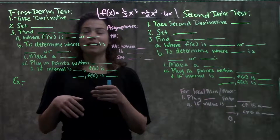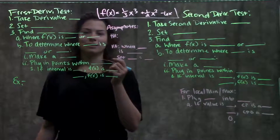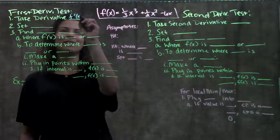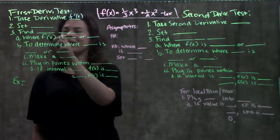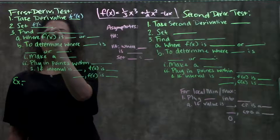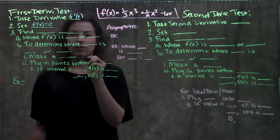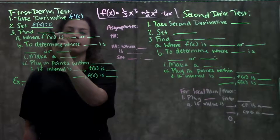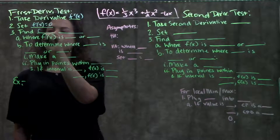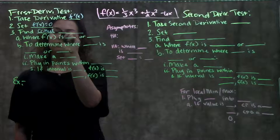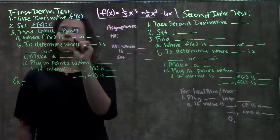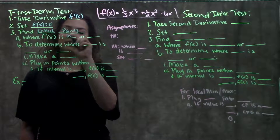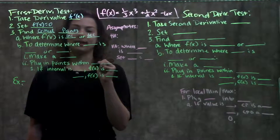Starting with our first derivative test, our first step is to take the derivative. When we do that, we get f prime of x. Second step, we set f prime of x equal to zero. When we solve the x values that make our function equal to zero, we are finding our critical points. Critical points tell us wherever f of x, our original function, is either increasing or decreasing.